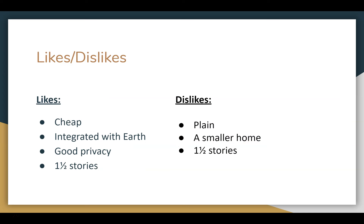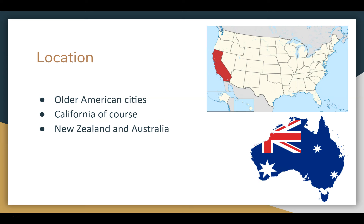I like that it's cheap and integrated with the earth, making it feel more natural. I like that it has good privacy. I don't like that it's plain and a smaller house. The one-and-a-half stories is a mixed bag — there are benefits to both, but there's not as much space. They're located in older American cities, mainly in California, and also in New Zealand and Australia because of Hollywood movies.